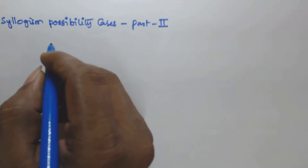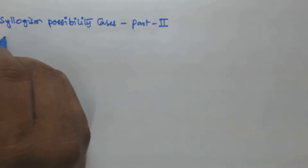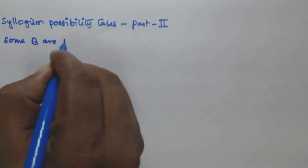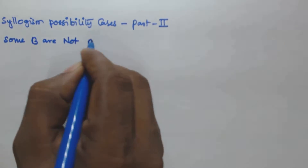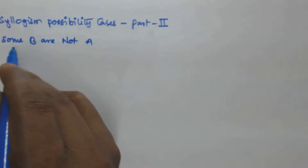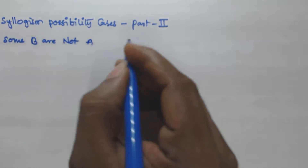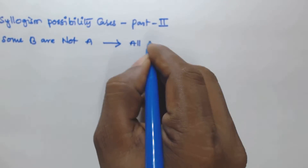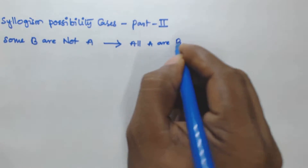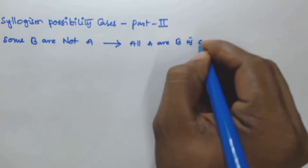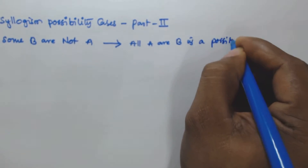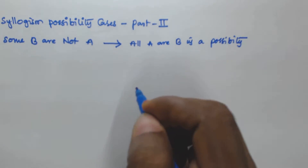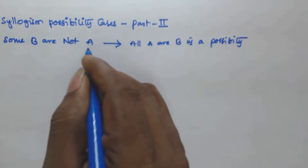Based on the given statement, if the given statement is in the form of 'some b r not a', the possibility cases we can derive are: first, 'all a r b' is a possibility. I will write all the possibility cases we can derive from this statement and then show you how we can justify those possibilities.